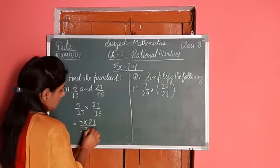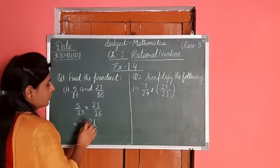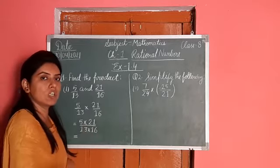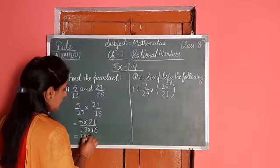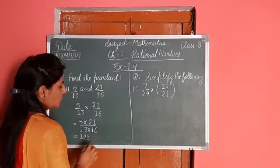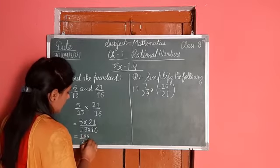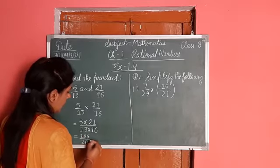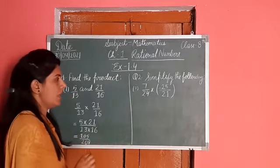5 into 21 is equal to 105 and 13 into 16 is equal to 208. So the answer is 105 upon 208.